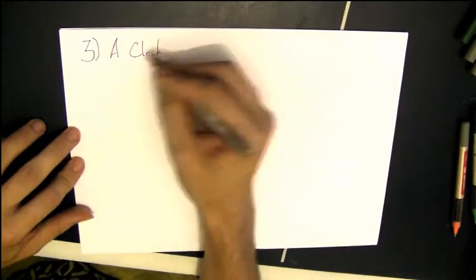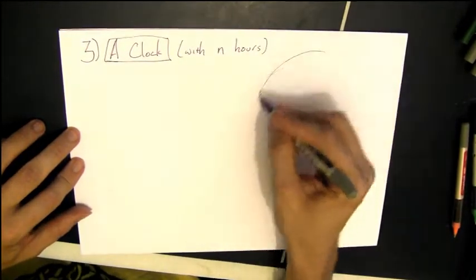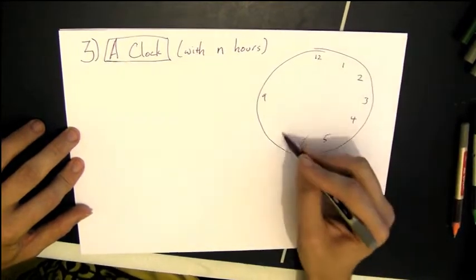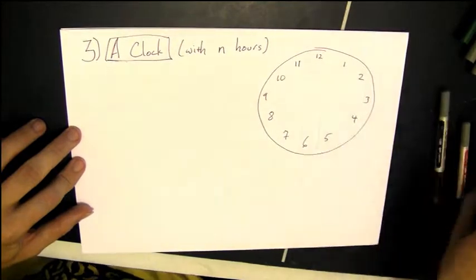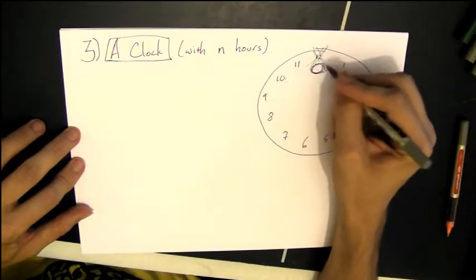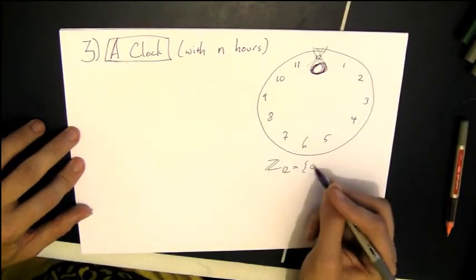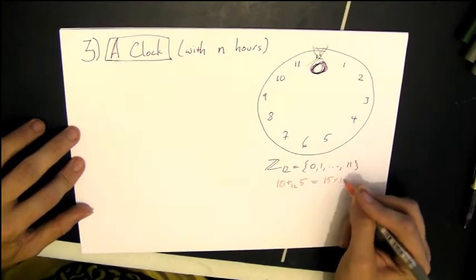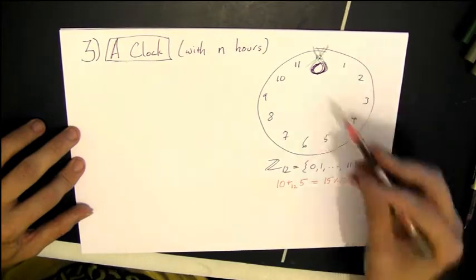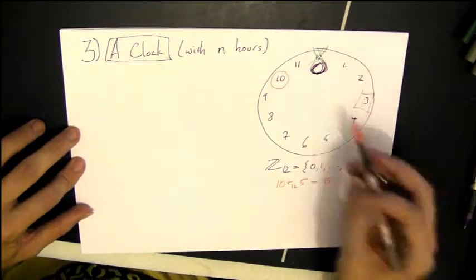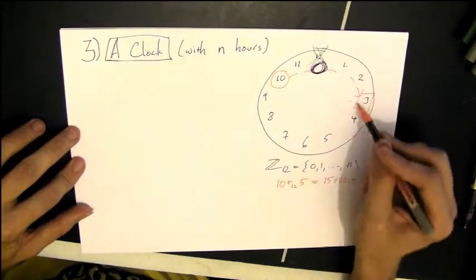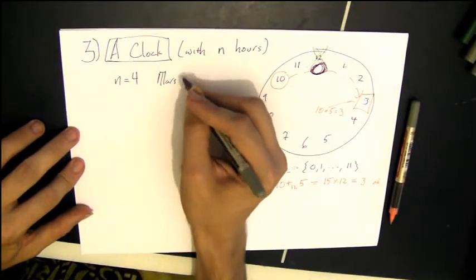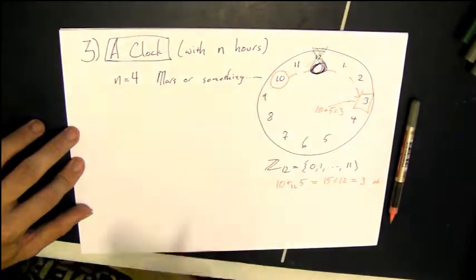How about a third version? So the third version is something that you've done kind of all your life. So if you take a clock with n hours on it, usually our clocks have 12 hours, and we're going to get rid of the number 12 and replace it with a 0 to make it look a little bit more like Z12, the numbers 0 through 11. And then Z12, we know that 10 plus 5 is 15, which mod 12 is 3. Likewise, on a regular clock, if it's 10 o'clock and you wait 5 hours, it's going to be 3.